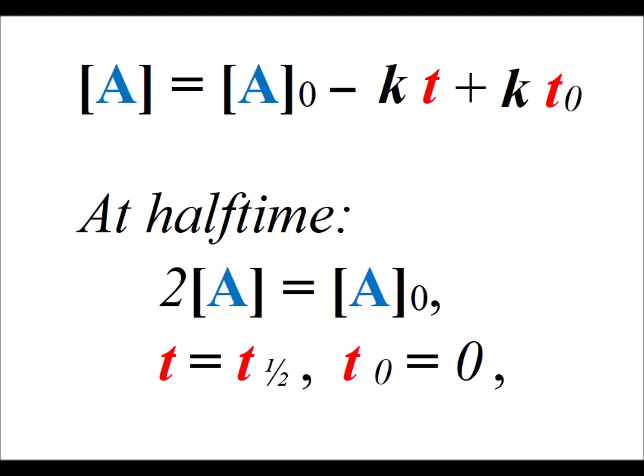We make the minor algebraic adjustment of adding [A]₀ to each side. And then we note at the half-life, the current concentration of A is half of what it was initially. So that means 2[A] equals [A]₀.